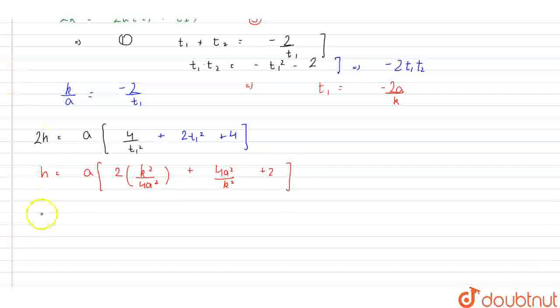So the final equation will be x equals to a into y square upon 2a square plus 4a square upon y square plus 2. This is the required answer. Thank you.